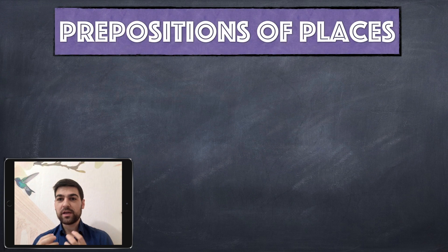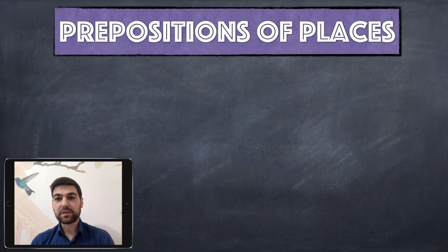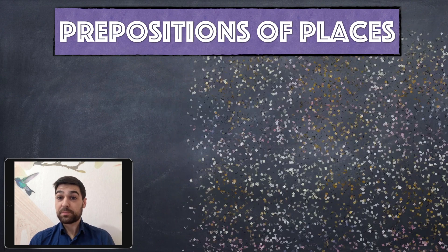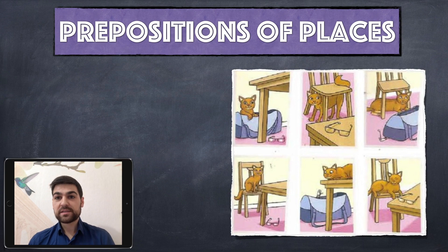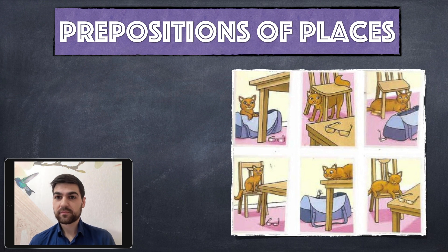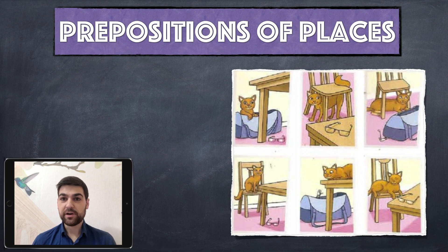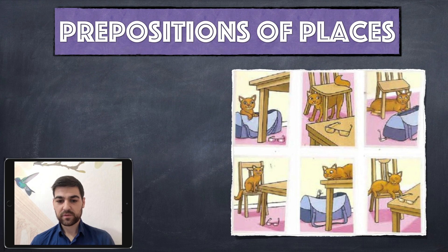Today's lesson is about prepositions of places. We will learn how to use words to explain where things are. If we look at this picture, we can see several items: a cat, a bag, a table, a chair, and glasses.